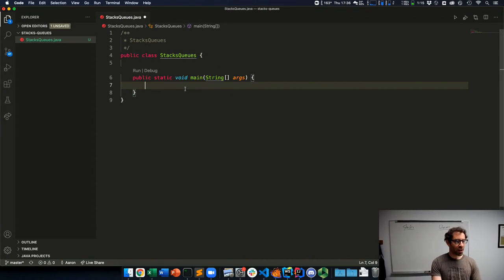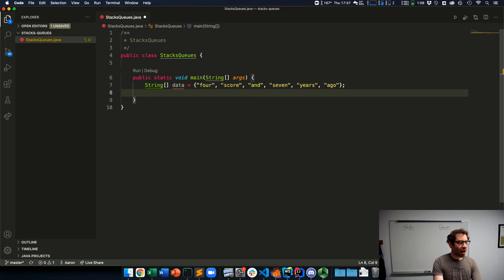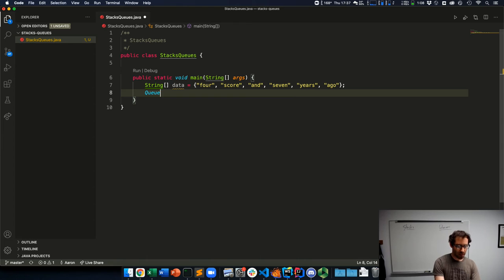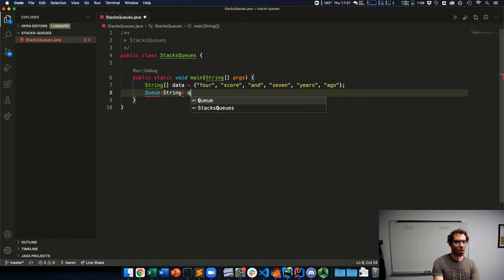Let's practice writing some code using stacks and queues. I'm going to declare a string array, I'll call it data. I'm going to initialize it to a particular set of strings. In this case, the beginning of the Gettysburg address, a speech by Abraham Lincoln that begins four score and seven years ago. Then I'm going to create a queue that holds strings, I'll call it a queue.